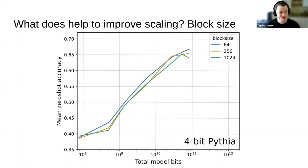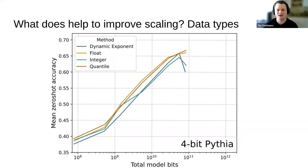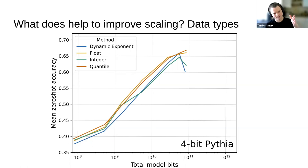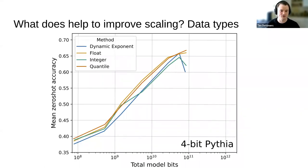To go even beyond that, we look at which data types are good for 4-bit quantization. Integer and dynamic exponent don't do as well. The floating-point 4-bit and the information-theoretically optimal quantile quantization perform better. So what you want is 4-bit with a small block size and either float or the information-theoretically optimal data type — that gives the best performance.